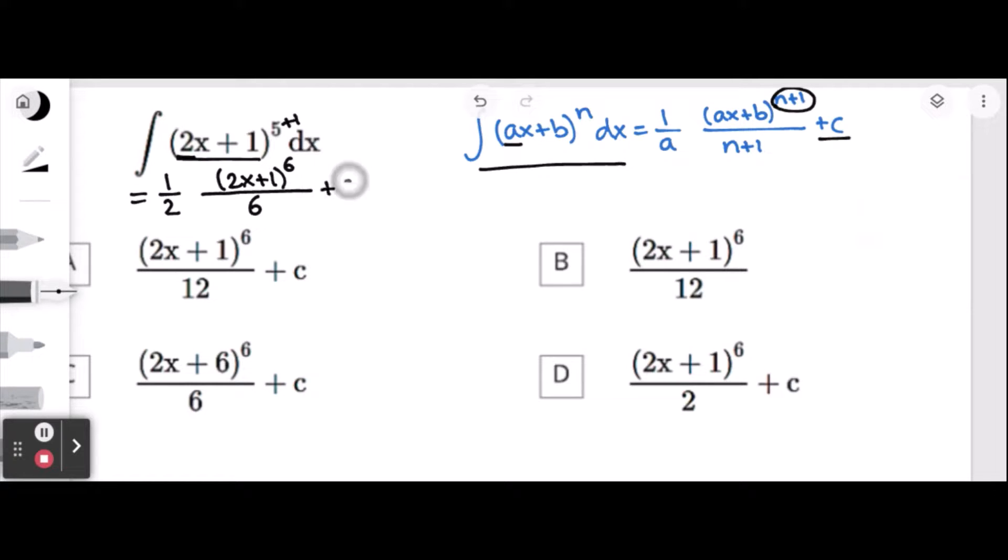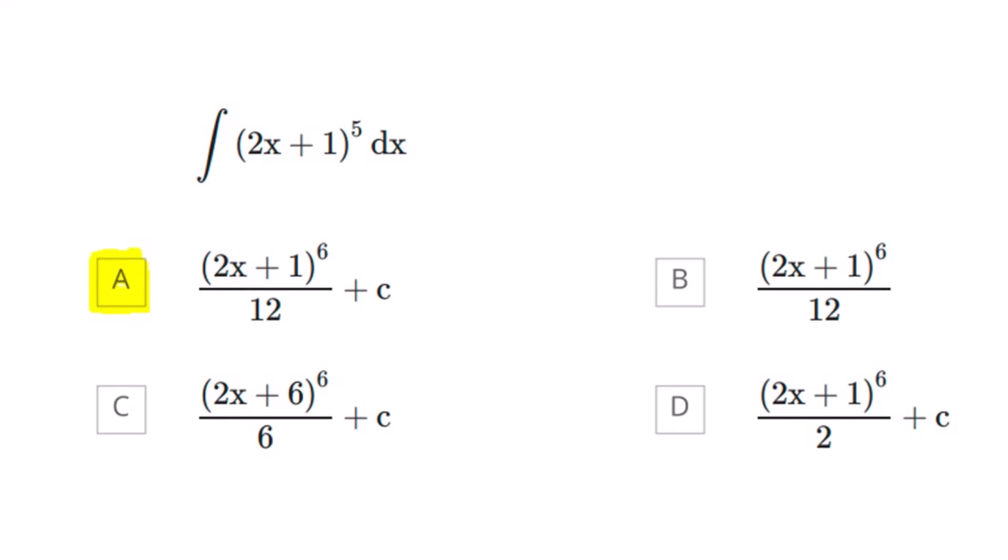Plus c. Now you can stop here or you can simplify more, which I will do now, which will be 2 times 6, which will give me a product of 2x plus 1 to the power of 6 over 12, which is 6 times 2, plus c. And this is our final answer. Thank you.